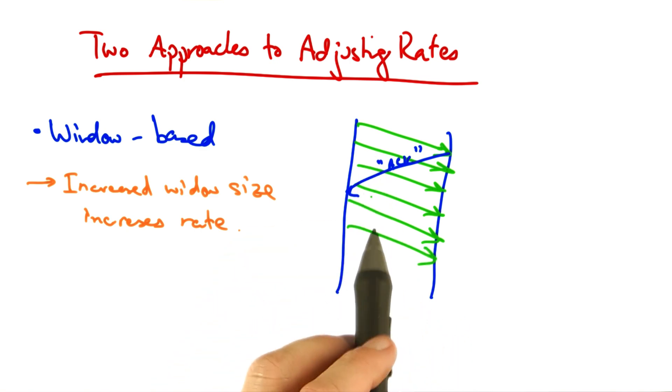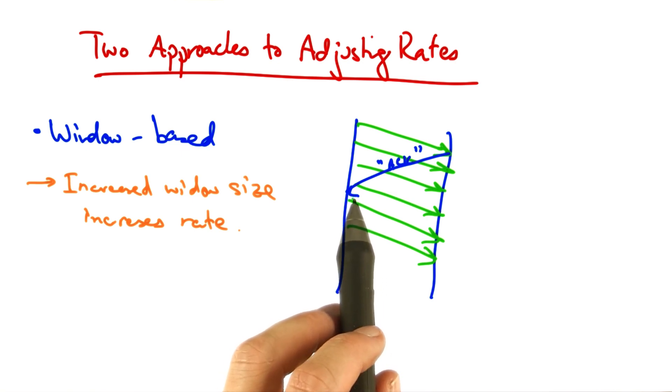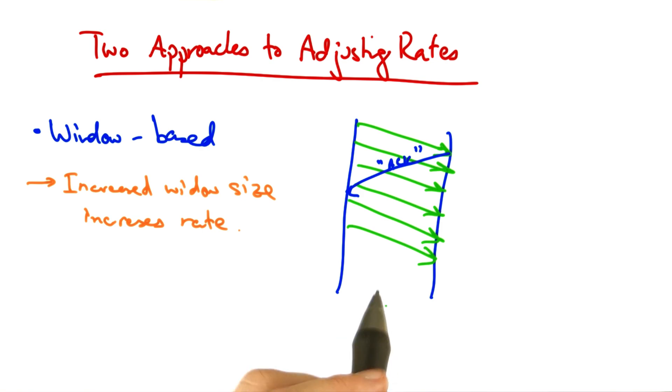A sender might increase its rate any time it sees an acknowledgment from the receiver. In TCP, every time a sender receives an acknowledgment, it increases the window size.